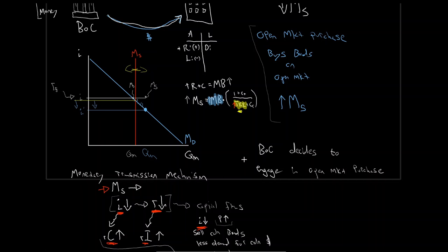The Bank of Canada can't control what private banks hold as their reserve ratios — they might just hold on to everything. Or banks might drop their liquidity concerns and expand the money supply more than hoped. We also can't control currency ratios, and as depositors change the amount they want to hold as cash, that has quite a drastic influence on our money supply. The Bank of Canada can use open market operations to move money supply around to obtain an interest rate, but it becomes extremely difficult because they can't really determine how powerful any one open market operation will be and what its effect on money supply will be. That's a huge problem in engaging monetary policy.